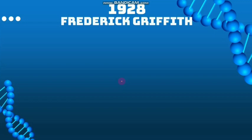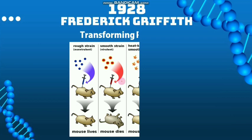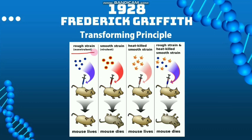In 1928 came the experiments which proved DNA is the genetic material. The first experiment is Frederick Griffith's transforming principle. He isolated two strains of Pneumococcus bacteria: the rough strain (R strain) and the smooth strain (S strain). The smooth strain has a smooth coating or capsule covering the bacterial cell, which helps the bacteria prevent digestion by the host immune machinery. The R strain lacks this outer coating and is susceptible to the host immune machinery.